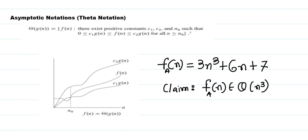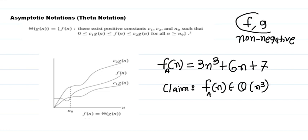In this video we will talk about asymptotic notations. The very first notation is theta notation. Before we start, let's understand the function a(n), which corresponds to algorithm A. The time required by any algorithm will always be non-negative, so all functions f and g are non-negative functions with non-negative arguments, because we can't provide a negative number of inputs to any algorithm.